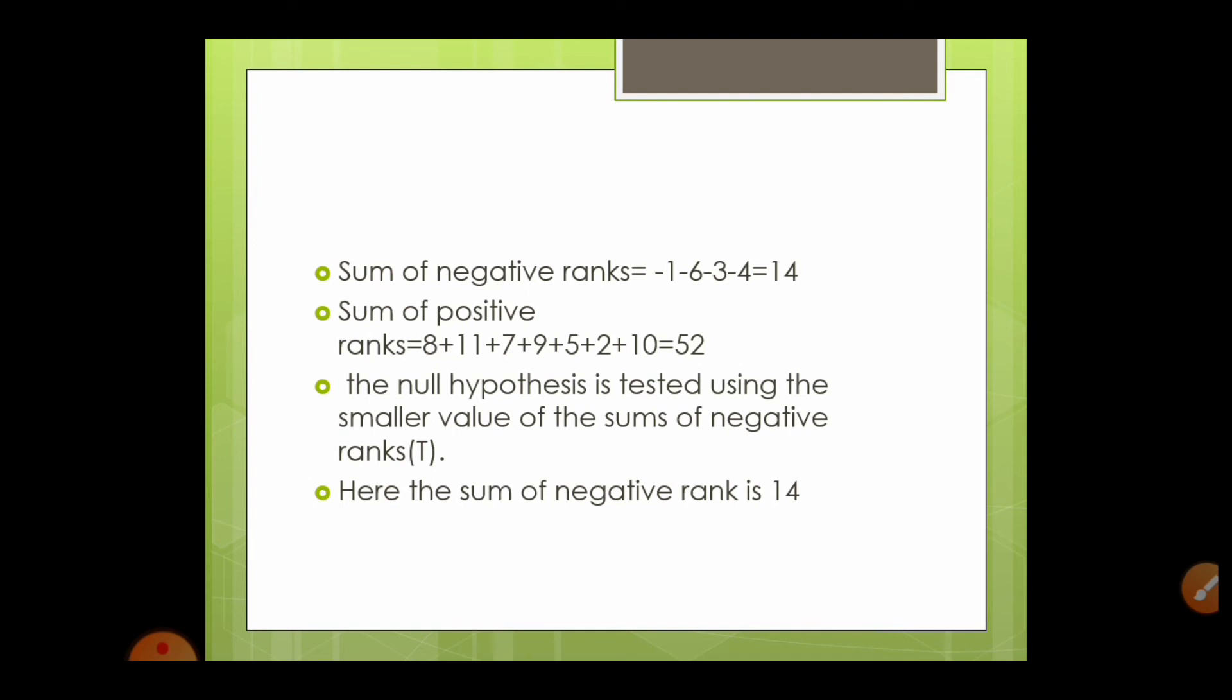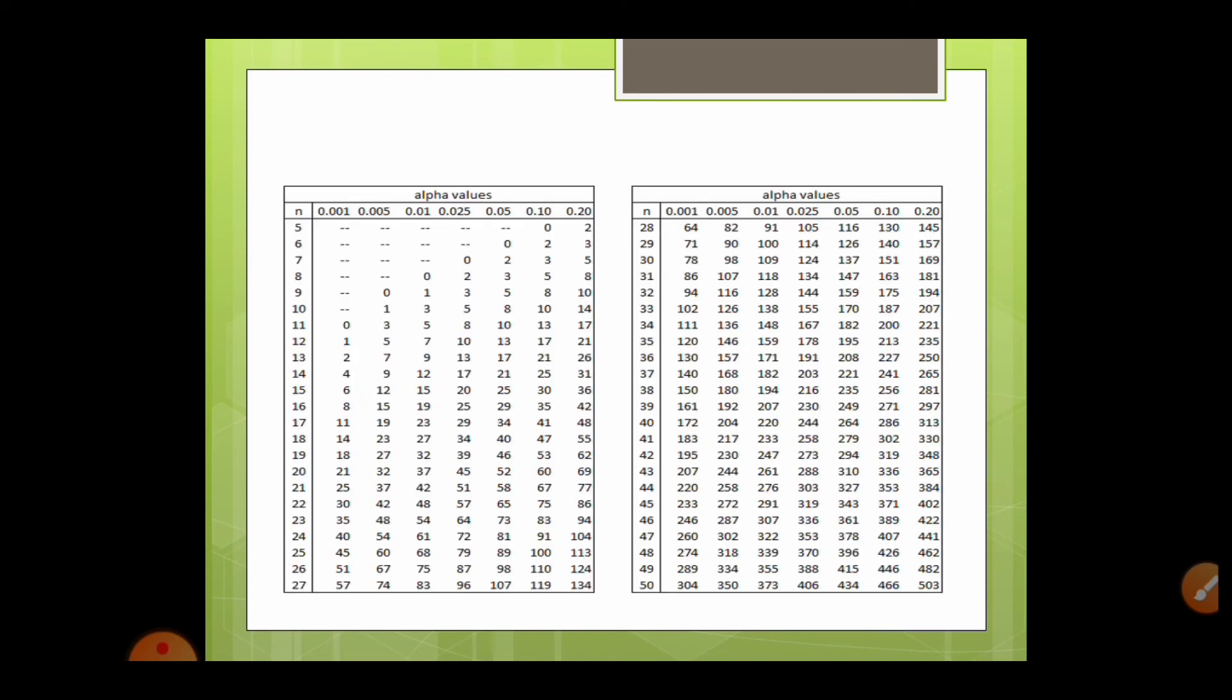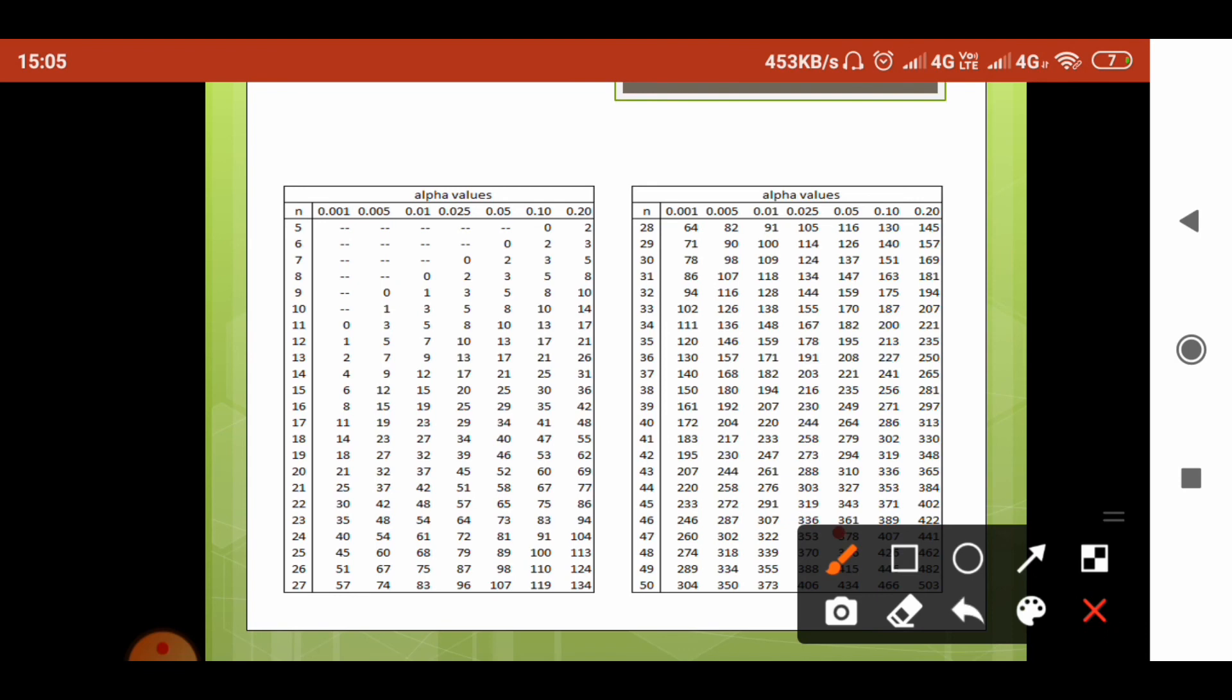In Wilcoxon's signed rank test, if the observed value is less than or equal to the critical value, we reject the null hypothesis. If the observed value exceeds the critical value, we fail to reject the null hypothesis. When you see the critical value table, n equals 11, and at the 0.05 level, the critical value is found to be 10.